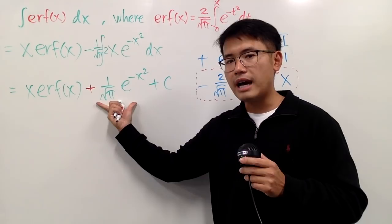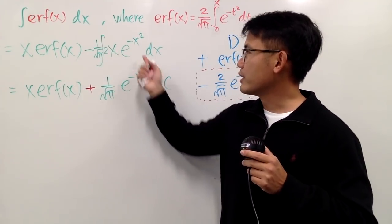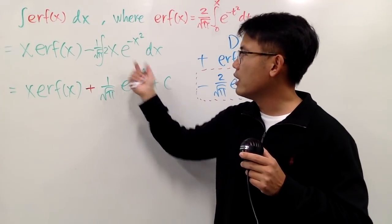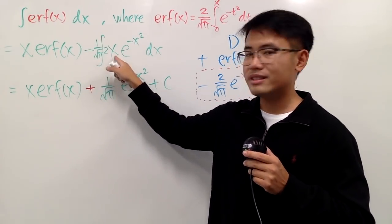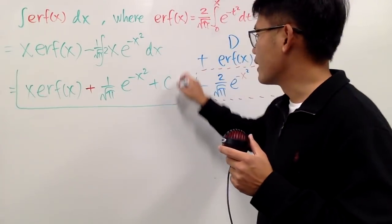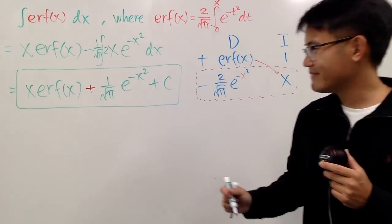And once again, if you differentiate this guy, this right here stays. And then this right here stays. But the chain rule says we have to multiply by the derivative of negative x squared, which is negative 2x right here. So that's why this right here is the answer. And we are done. Yeah. Really nice, huh? Yeah, that's it.